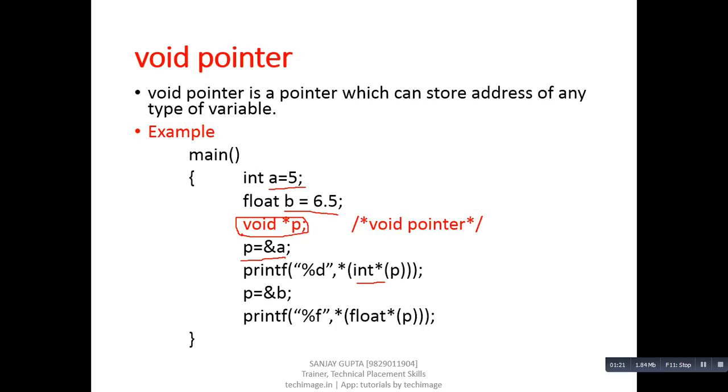So first we have to type cast p into integer pointer. After type casting, we can dereference p to print the value of the variable whose address is stored inside this pointer. Further, we have assigned the address of b into p.